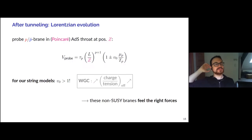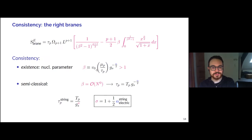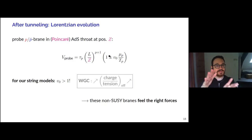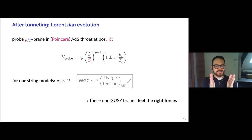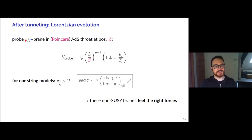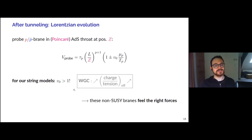After the branes nucleate, the same beta parameter — the ratio V_0 μ/T — appears in the potential that drives the Lorentzian evolution, which is the expansion of the branes. This V_0 parameter is exactly one in the supersymmetric case but larger than one for our non-supersymmetric models. This means that instead of extremal branes that neither repel nor attract, like-charged branes do repel. This is due to renormalization of the charge-to-tension ratio by this finite V_0 factor, and we interpreted this as a realization of the weak gravity conjecture for branes in this non-supersymmetric context.